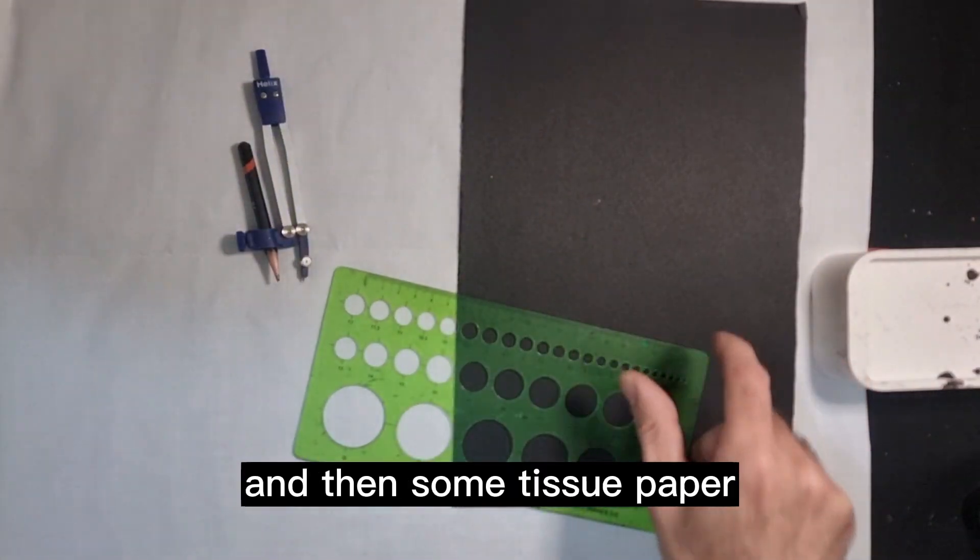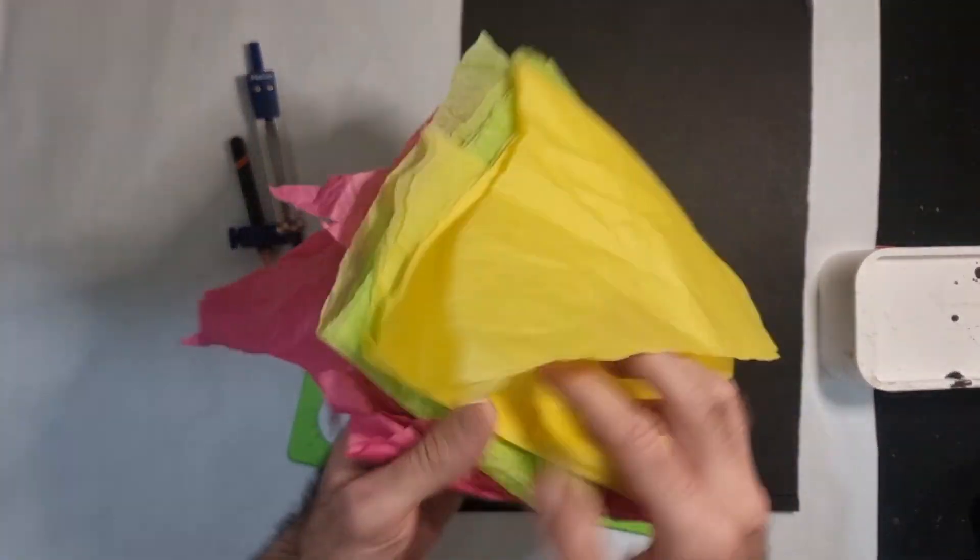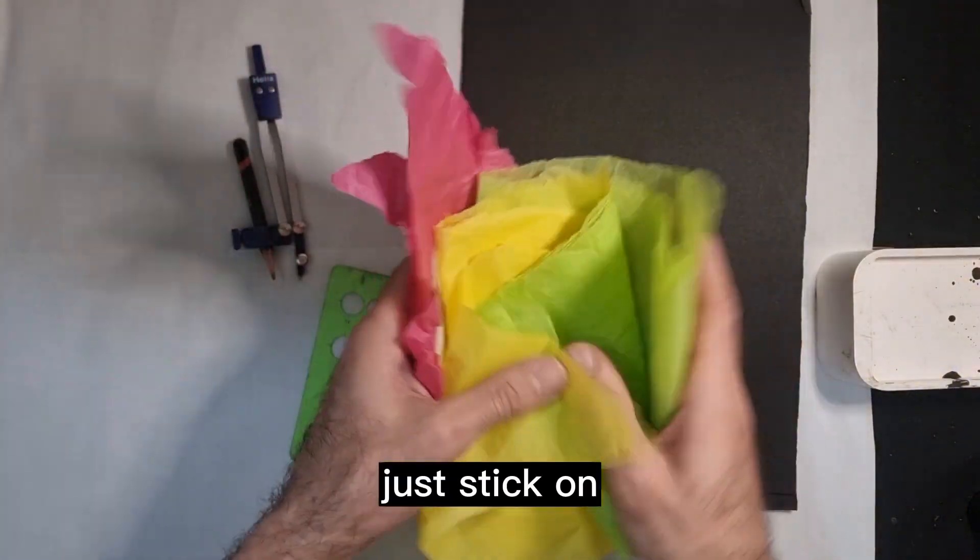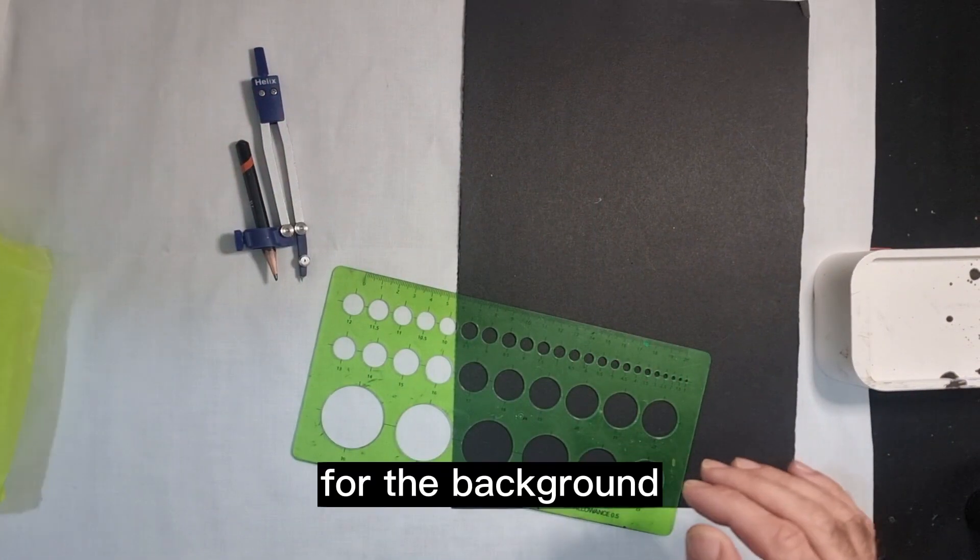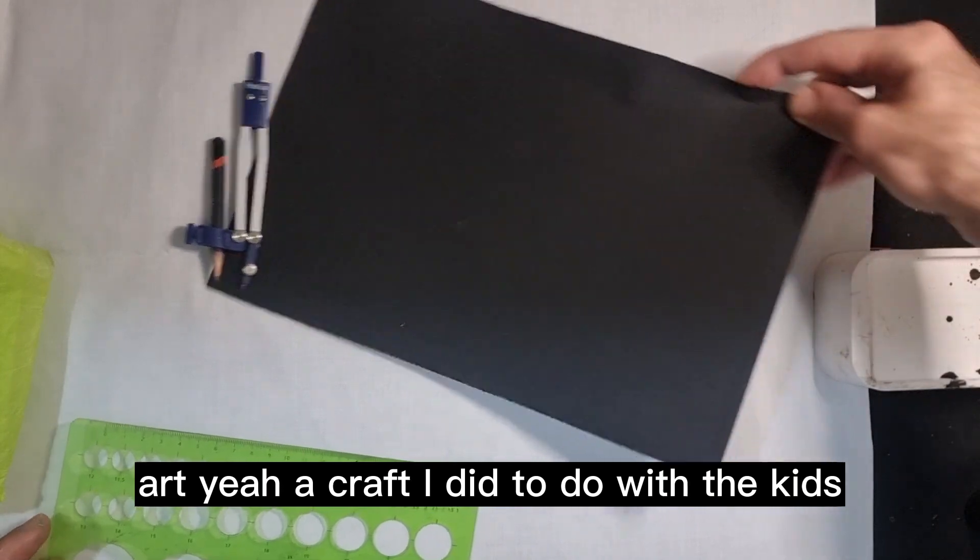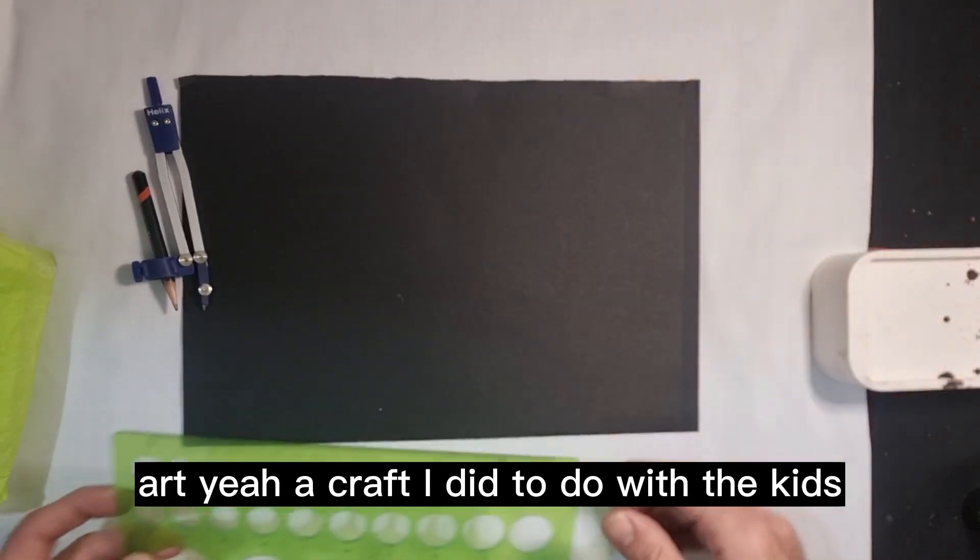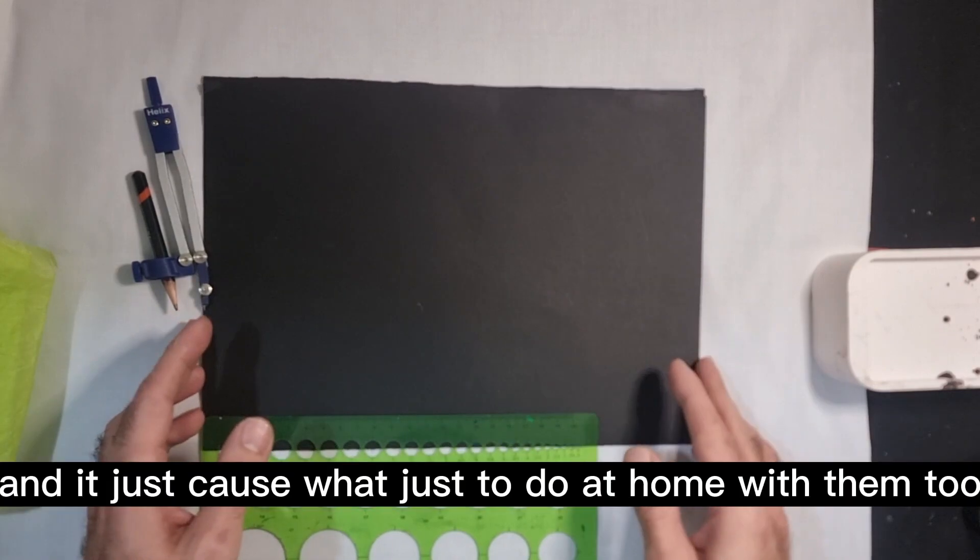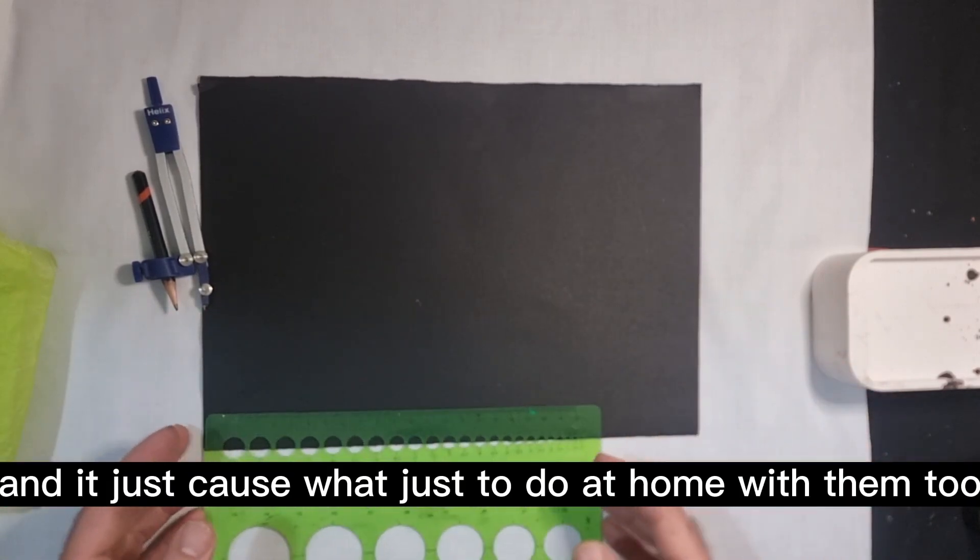A ruler to measure your compass, and then some tissue paper, different colored tissue paper there to stick on for the background. This is a great little art craft idea to do with the kids and it's great to hang up in their windows. It's just cool as well just to do at home with them too.